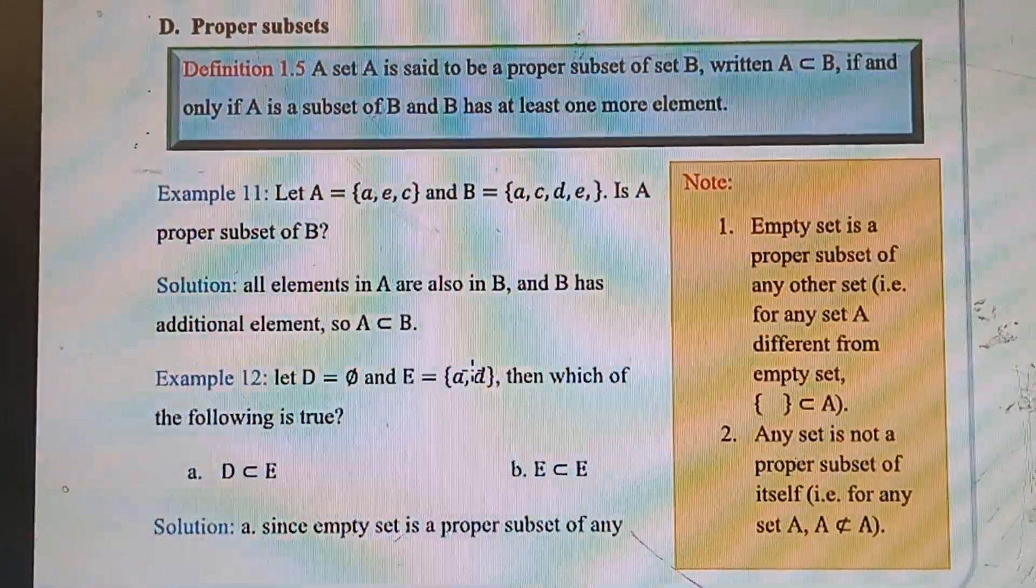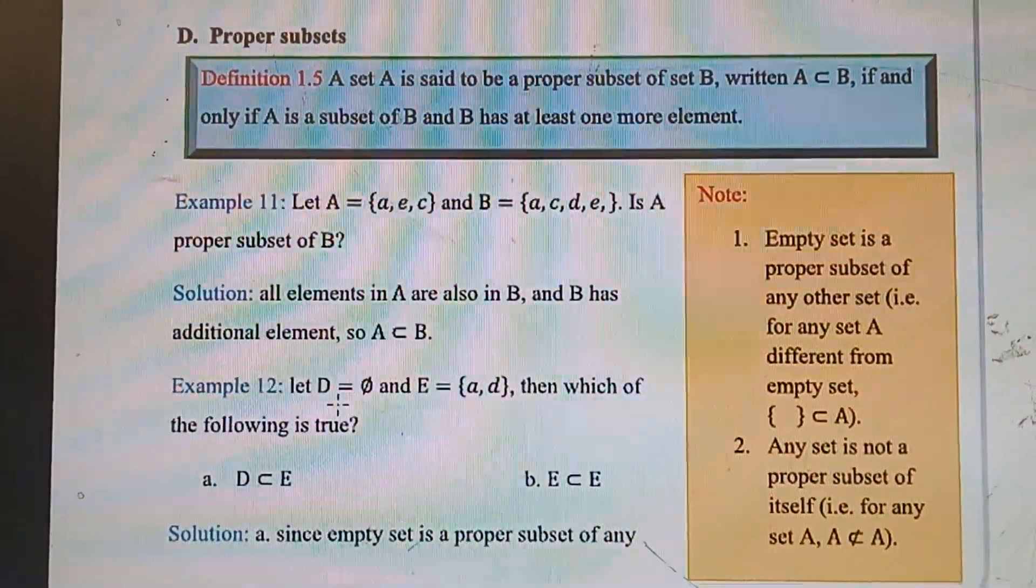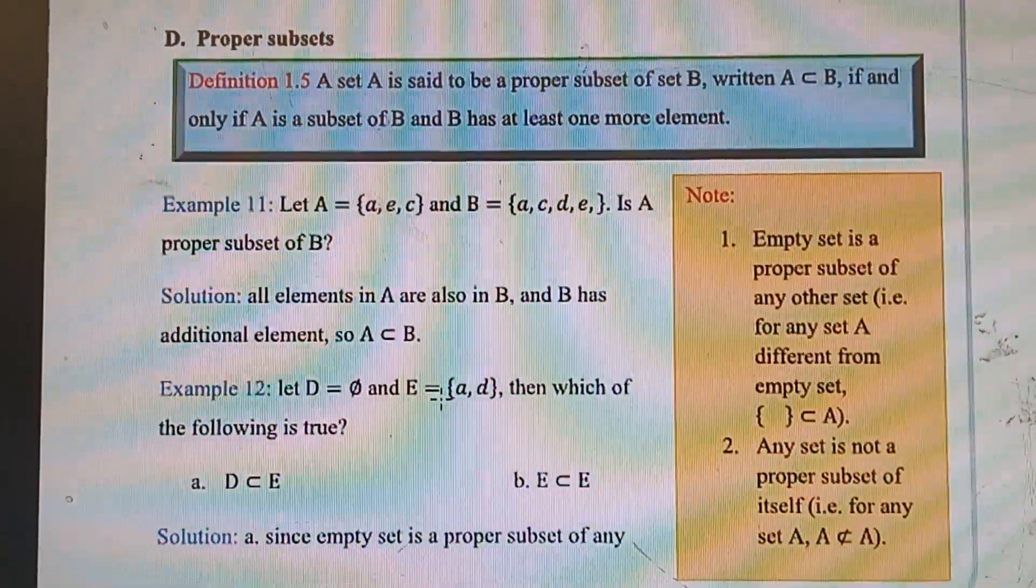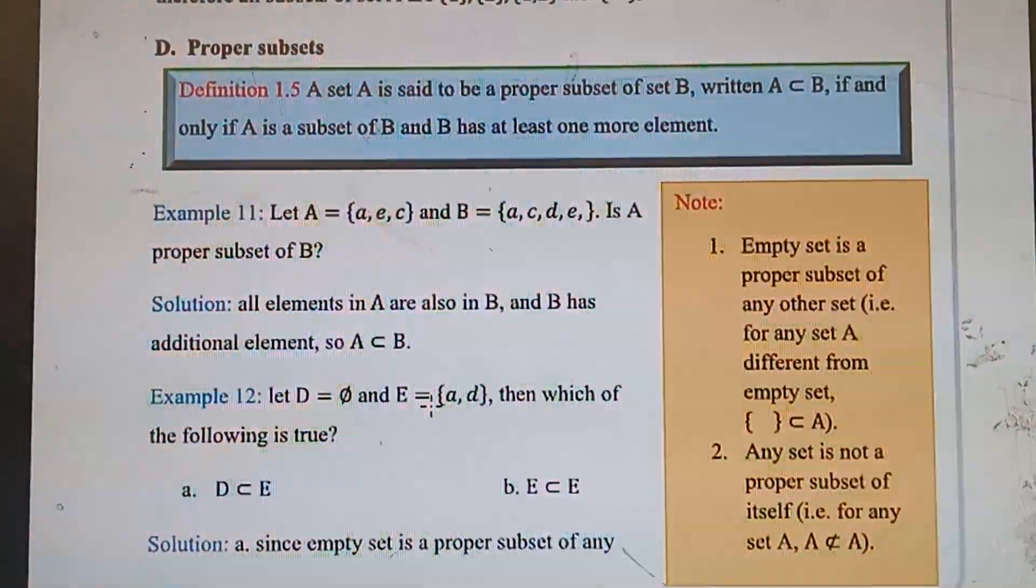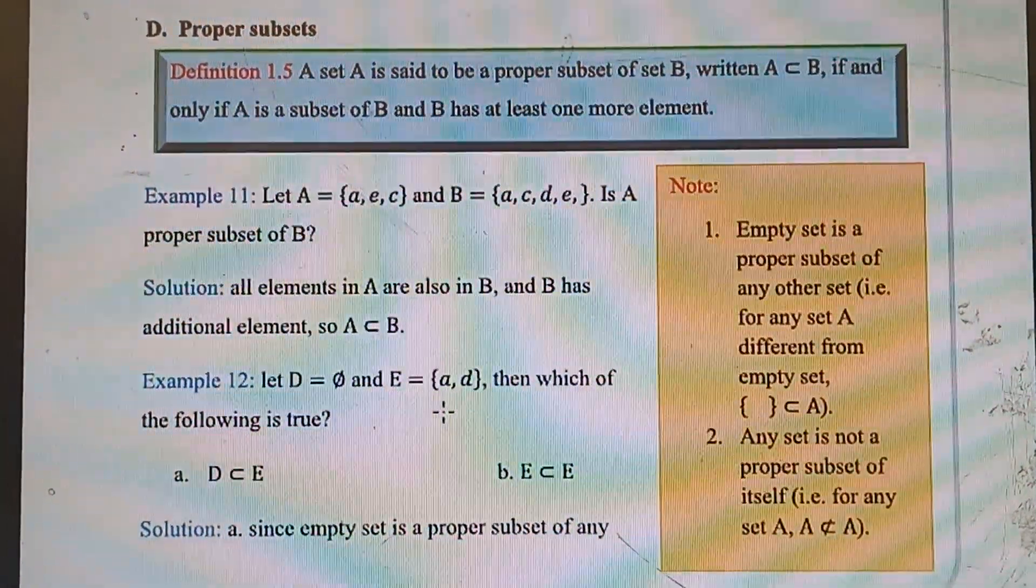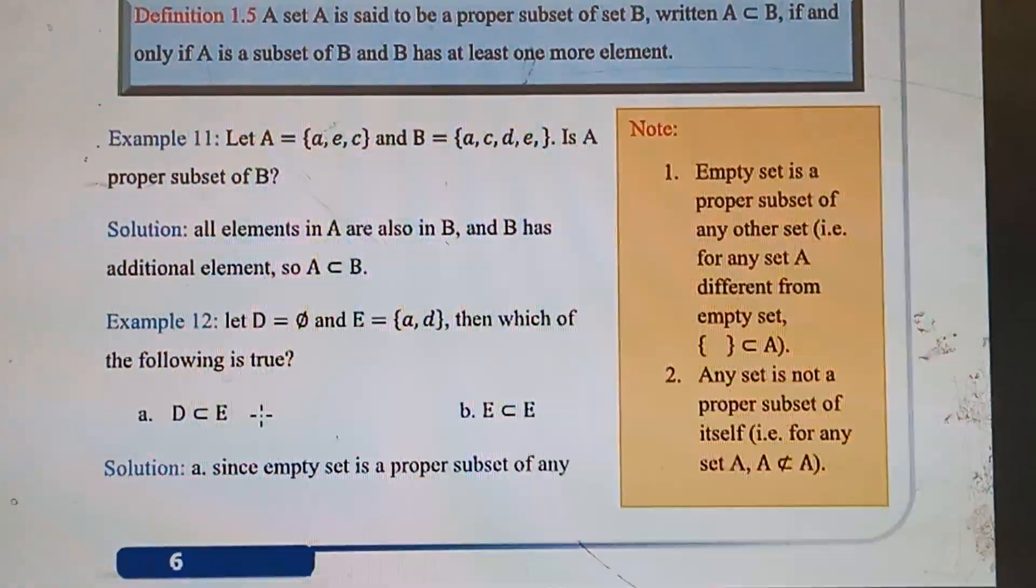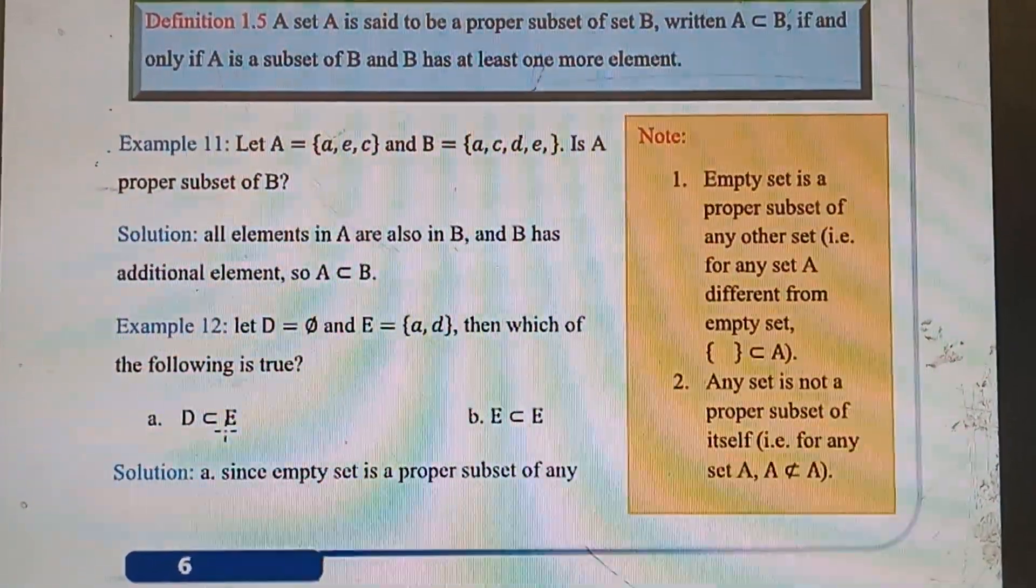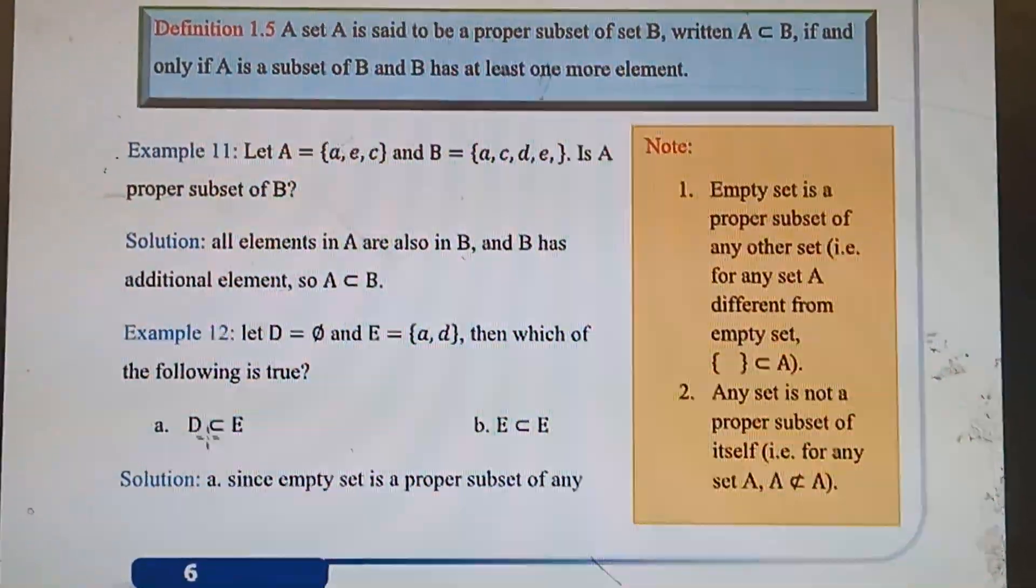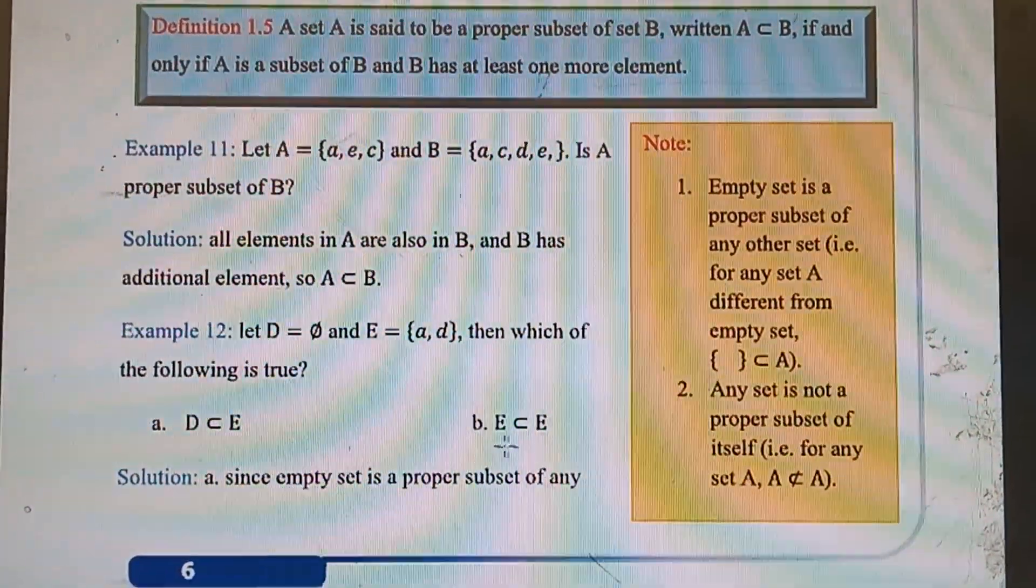Good students. The next one is Example 12. Let set D equal empty set and set E equal {a, d}. Then which of the following is true? Now we are going to decide the correct one. Option A: D⊂E. Option B: E⊂E.